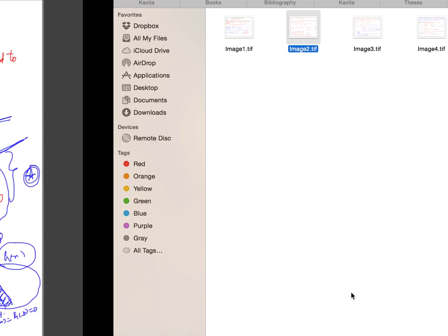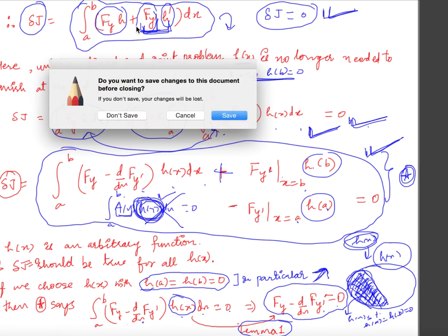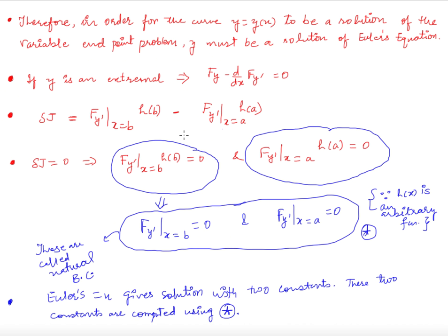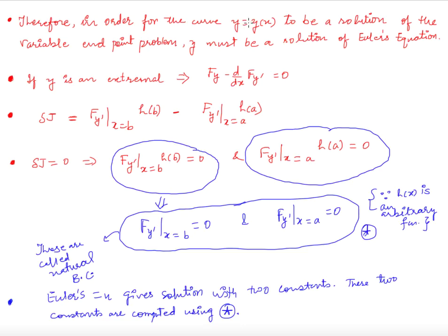This is nothing but the normal Euler's equation. So for y(x) to be a solution of the variable endpoint problem, y must satisfy the Euler's equation: f_y minus d/dx(f_{y'}) = 0. This means all extreme functions will come from this equation — they will be solutions of it.